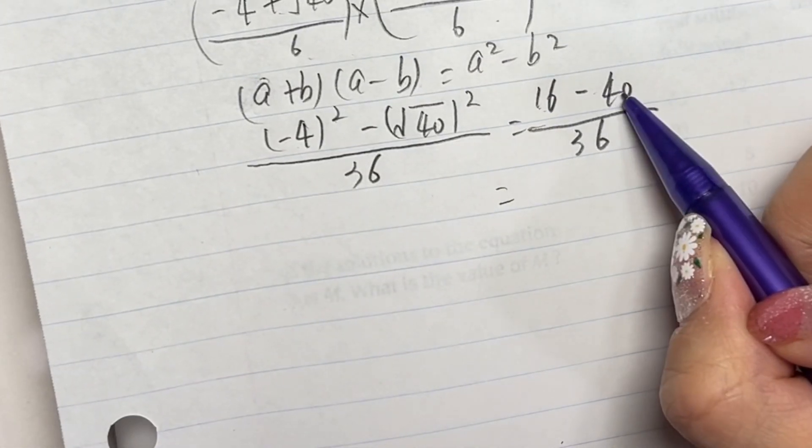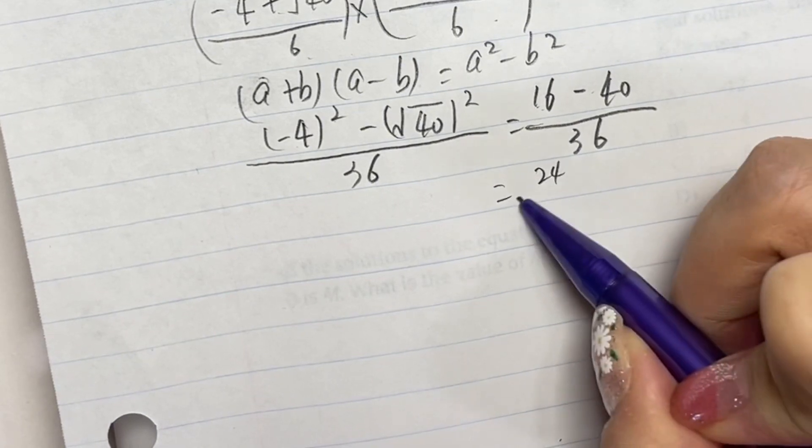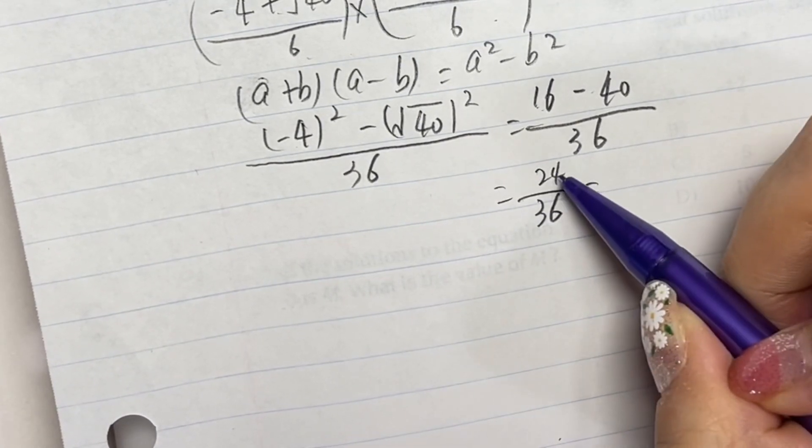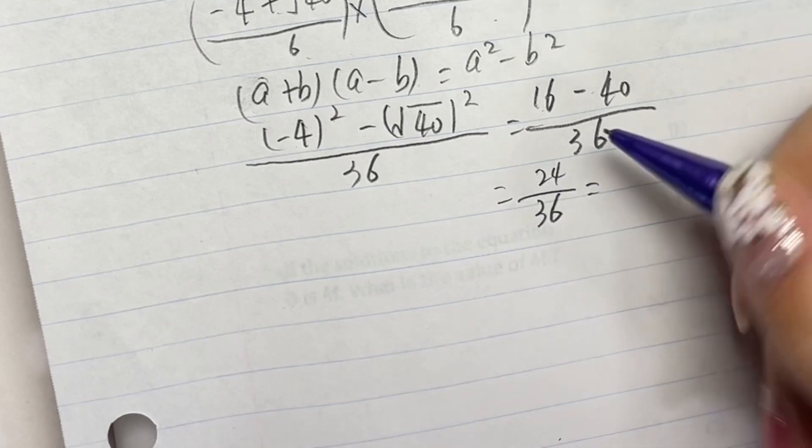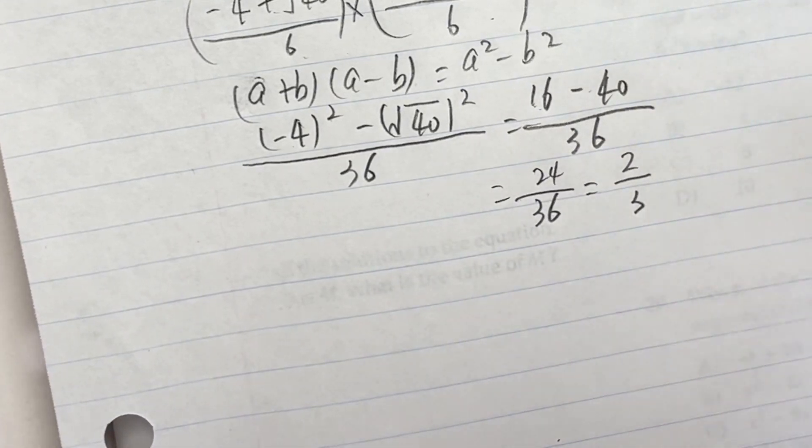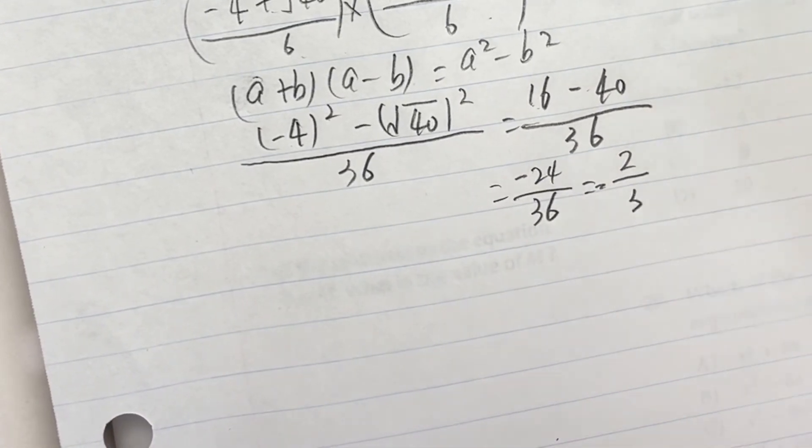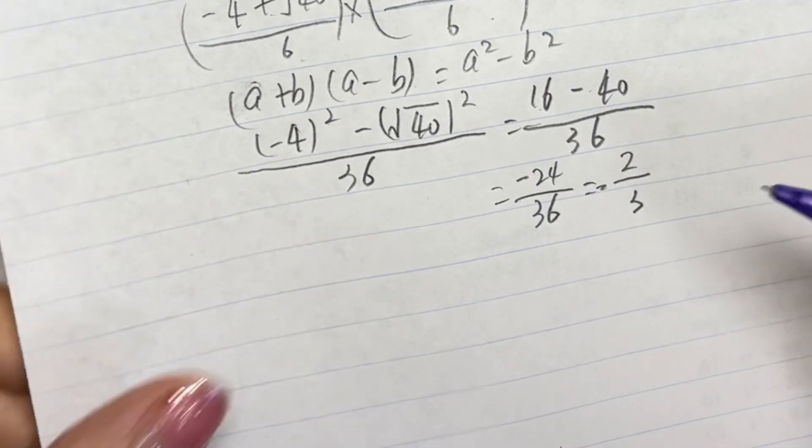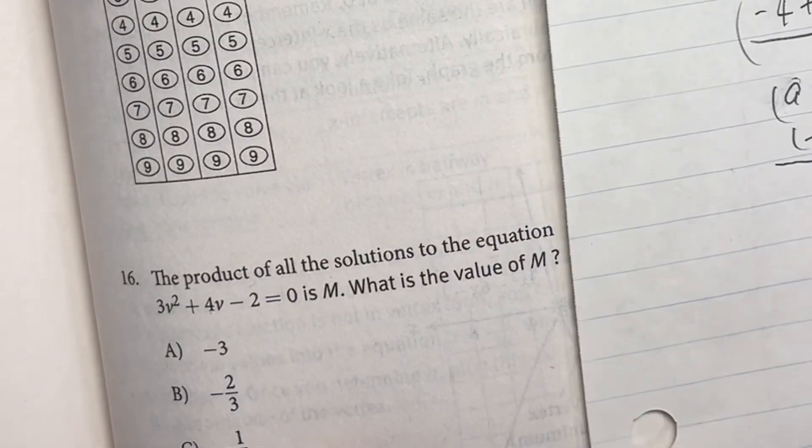So 16 - 40 is -24 over 36. Then we can simplify it, divide by 2, so this is 2/3. So this is negative, so it's -2/3. So B is our answer.